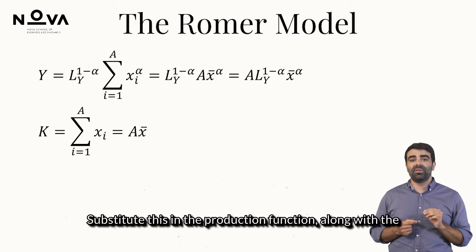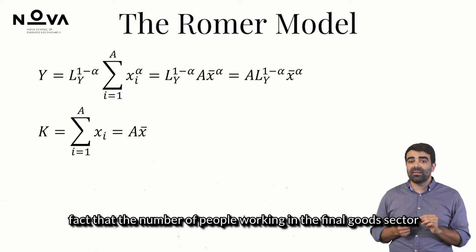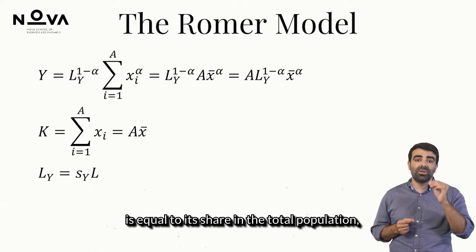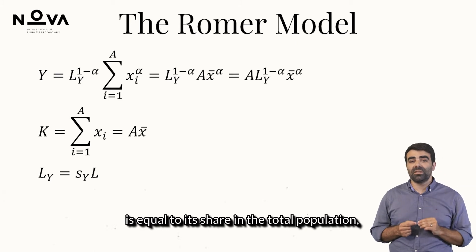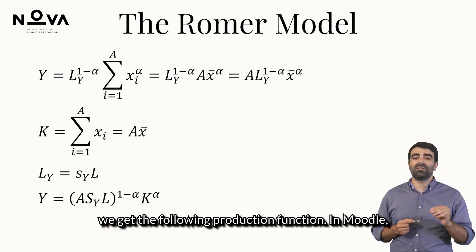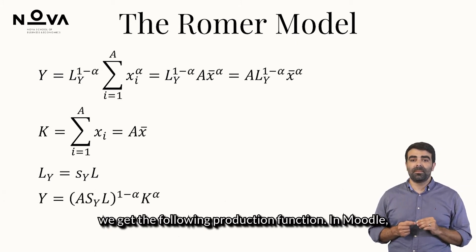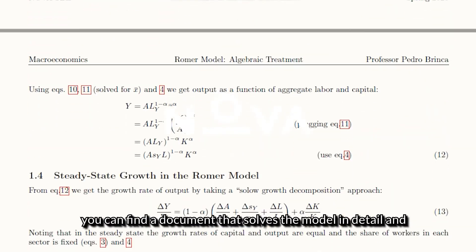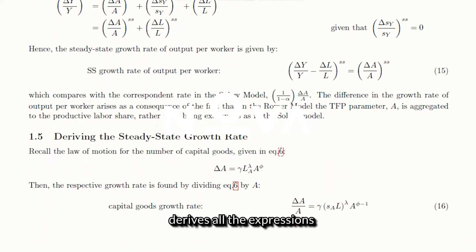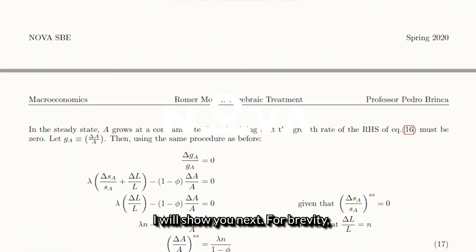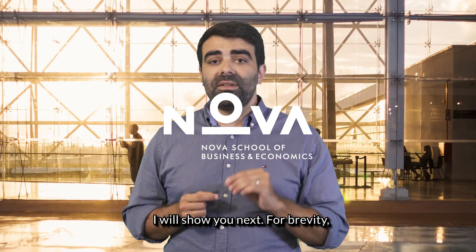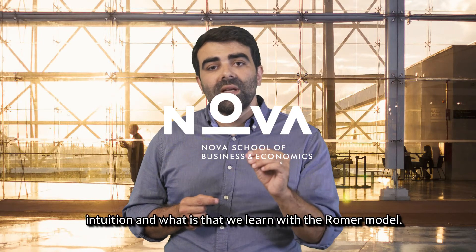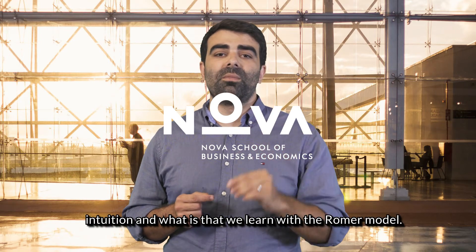Substituting this into the production function, along with the fact that the number of people working in the final goods sector is equal to its share in the total population, we get the following production function. In Moodle, you can find a document that solves the model in detail and derives all the expressions shown next. For brevity, I'm only going to comment on the results, intuition, and what we learn from the Romer model.